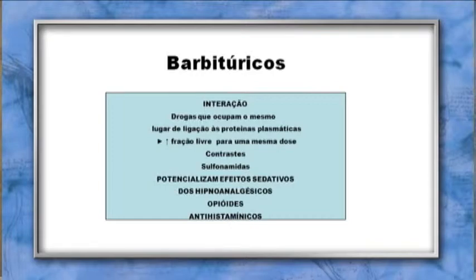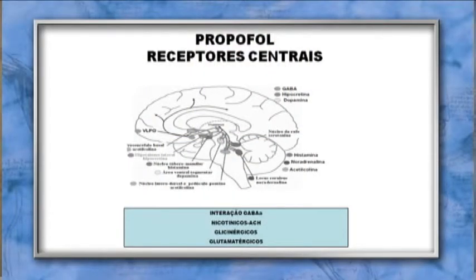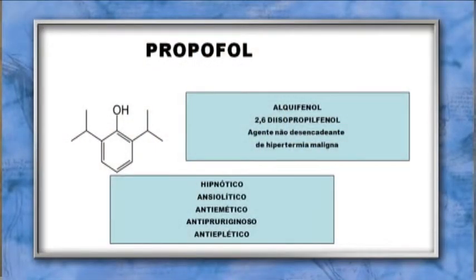Os barbitúricos potencializam os efeitos sedativos dos hipnoanalgésicos, opioides e anti-histamínicos. Drogas que ocupam o mesmo local de ligação às proteínas plasmáticas aumentam a fração livre do barbitúrico (ex.: contraste, sulfonamidas). O propofol (2,6-diisopropilfenol), um alquilfenol, age em receptores centrais. A interação com o receptor GABA-A é semelhante à do barbitúrico — aumenta a duração de abertura do canal de cloro, independentemente do GABA. Também tem efeito sobre receptores nicotínicos de acetilcolina, glicinérgicos e glutamatérgicos. É agente não desencadeante de hipertermia maligna.